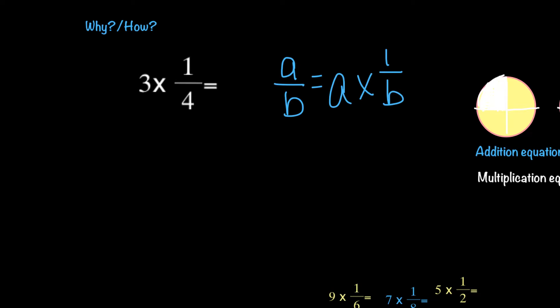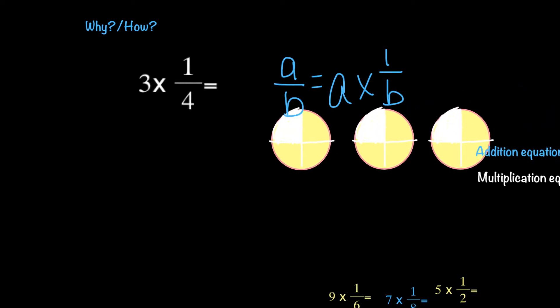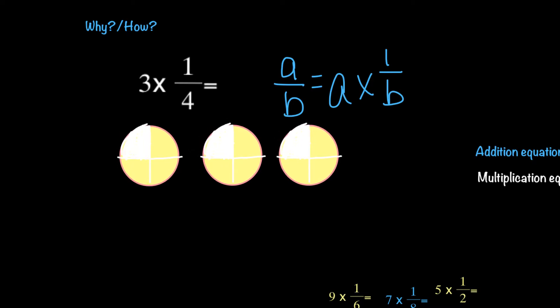So when I look at 3 times 1/4, I can think of it like a picture, and that means I could drag this in here, and I've basically got 1/4 three times, and I'm multiplying that.